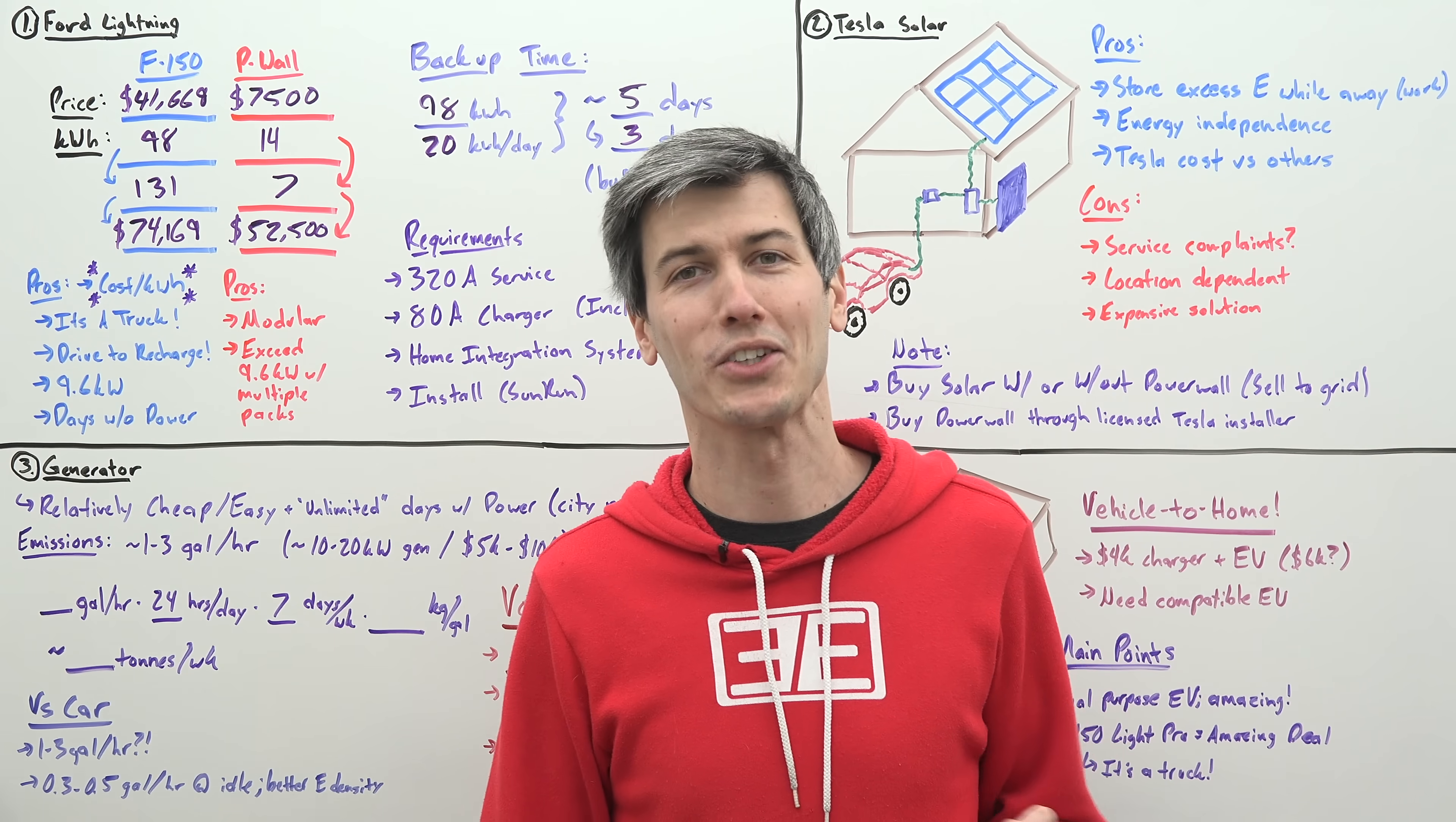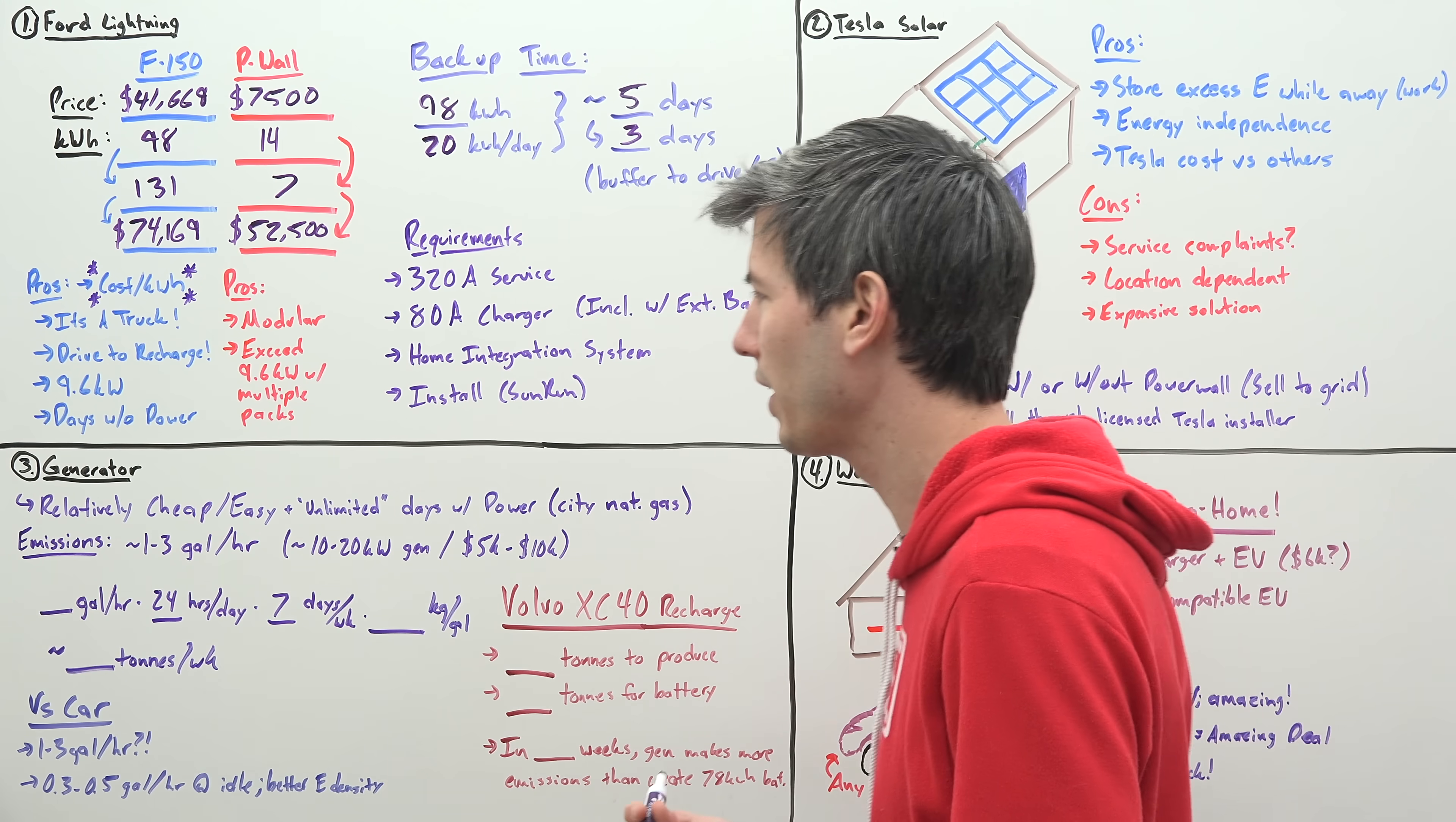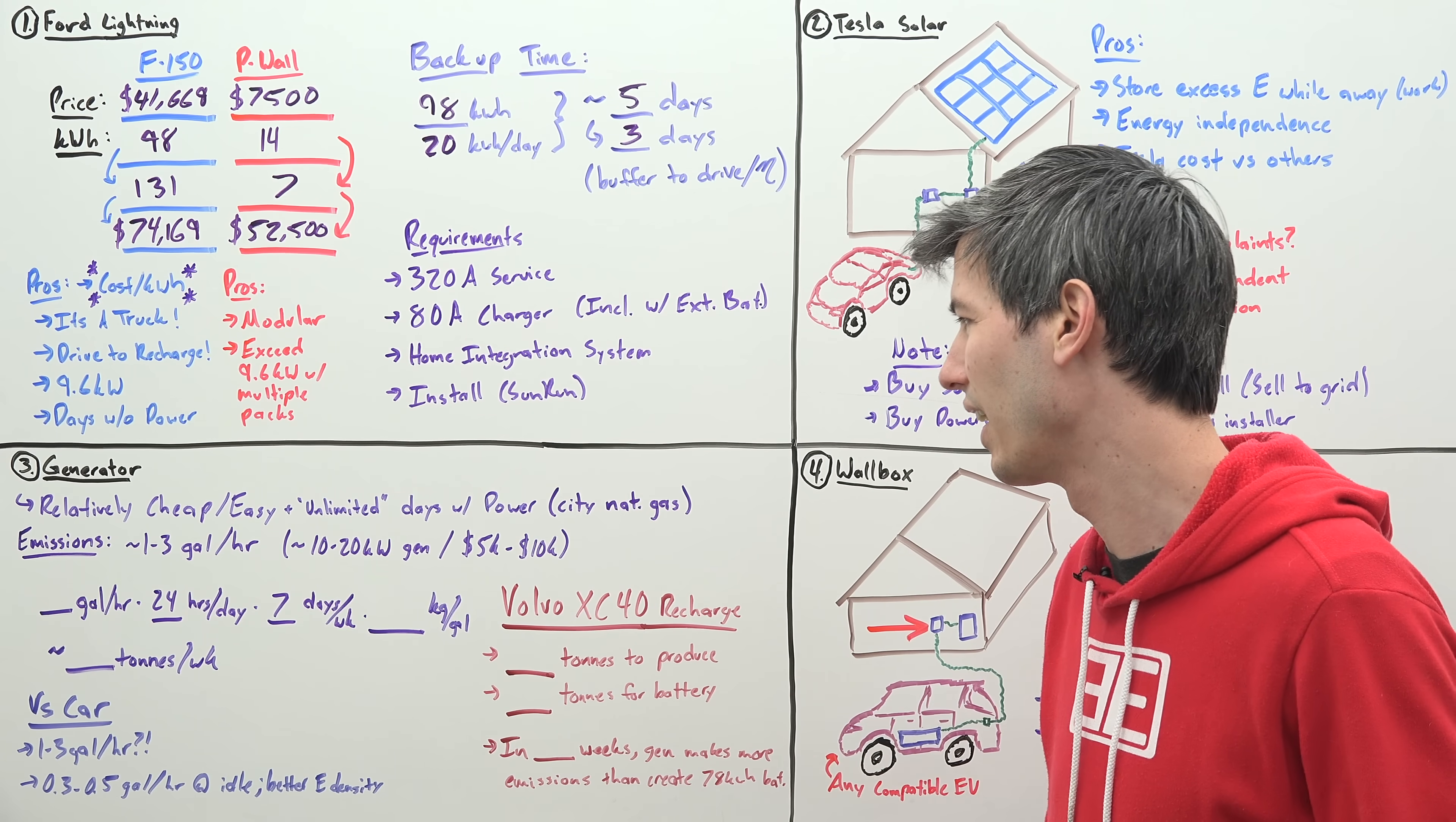I was surprised, actually, how bad they are. They use quite a bit of fuel. I was pretty shocked to see that. And it kind of makes sense once you run the math. But essentially, these things are burning one to three gallons an hour in that range, depending on half load, full load, if you're running in a 10 to 20 kilowatt generator.